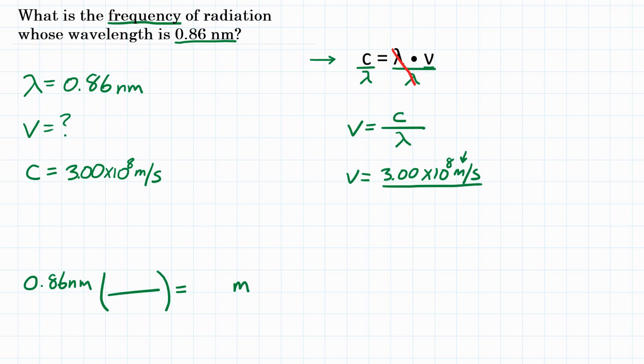So we're starting with nanometers, so nanometers will go on the bottom of our conversion factor. We want meters, so it will go on top. Now I need to know the relationship between meters and nanometers. Well, 1 meter equals 10 to the ninth or 1 billion nanometers.